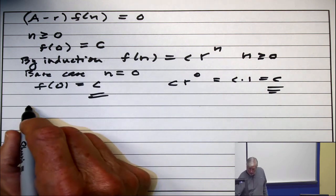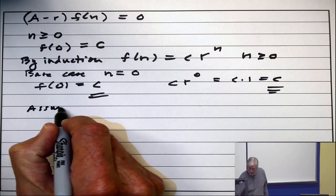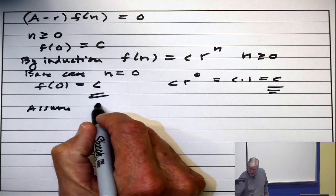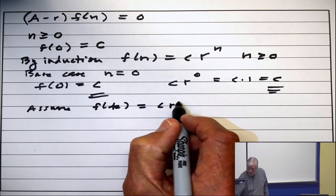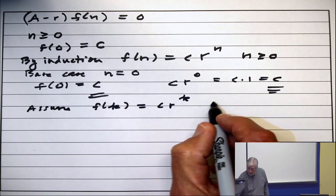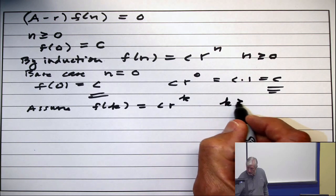Then you assume, for the inductive step, that f(k) = c·r^k for some k ≥ 0.